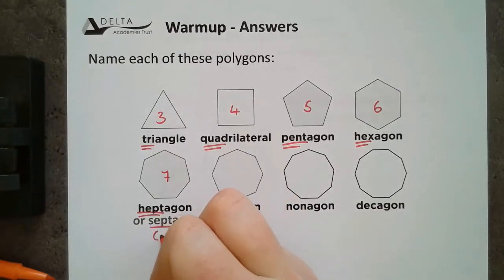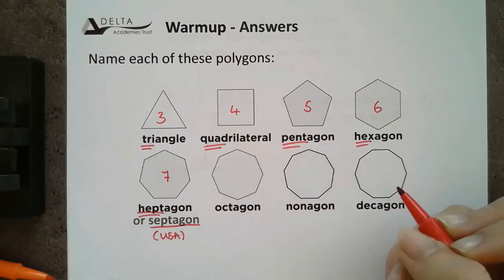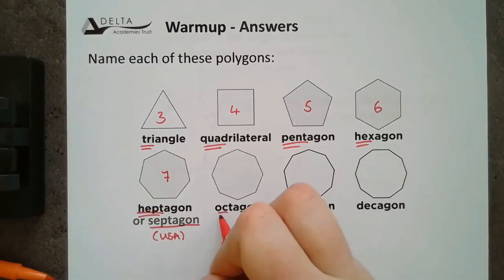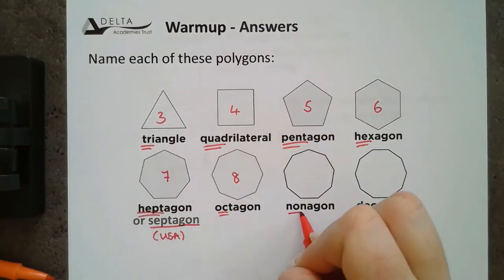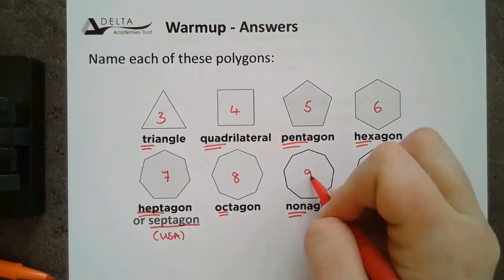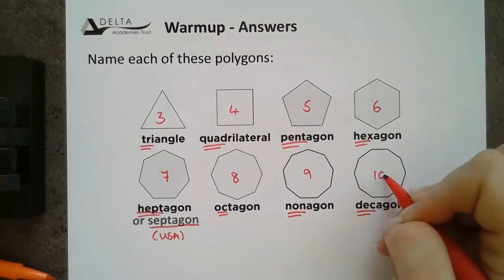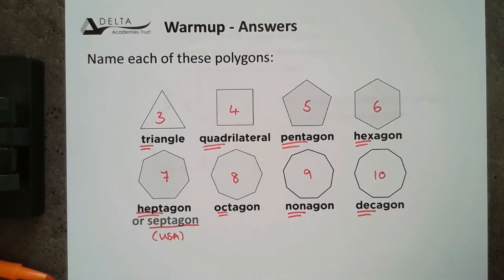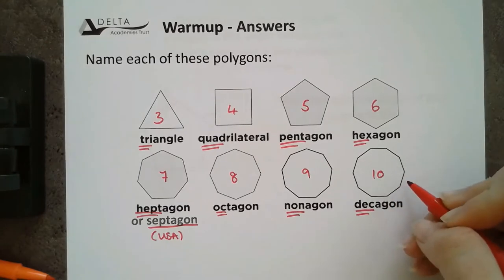Hept for 7. This septagon is very American, but it may be acceptable. I'd go for hept just to be safe. Octagon meaning 8, nonagon meaning 9, and decagon meaning 10. There will also be some of you that are thinking about a dodecagon. That is a 12 sided shape.